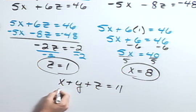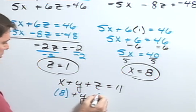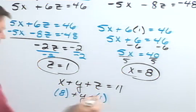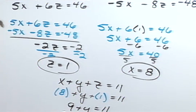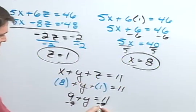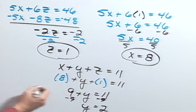So instead of the x I'll use 8 plus y plus z, but instead of the z I'm going to use a 1 equals 11. So 9 plus y equals 11. Subtracting 9 from both sides gives me y equals 2.